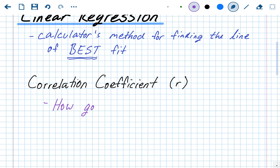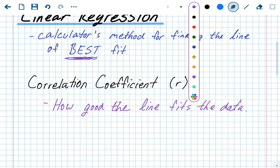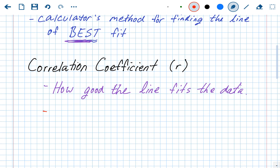The correlation coefficient tells us how good of a fit the line is — how well your line of best fit fits the data. There will always be a line of best fit, but best doesn't necessarily mean it's good. How good that line is depends on the correlation coefficient. Your R value is always going to be between negative 1 and positive 1. If it's negative, you have a negative slope; if it's positive, you have a positive slope.